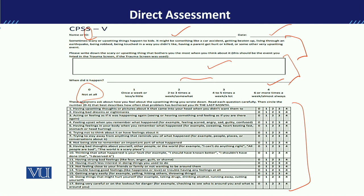Zero means not at all. One means once a week or less — a little. Two means two to three times a week — somewhat. Three means four to five times a week — a lot. Four means six or more times a week — almost always. So within this, we need to see the intensity of the child's symptoms. For example, the first item is related to upsetting thoughts or pictures — intrusive thoughts or images that keep coming into the child's mind. If they are occurring very frequently, the child will mark four; if less frequently, they will mark two.